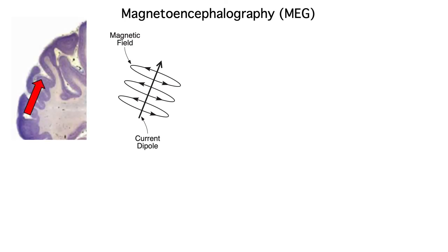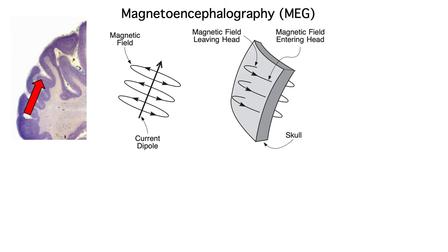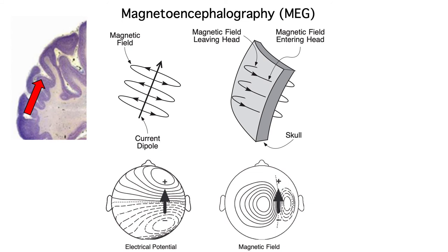So, the electrical dipoles that create the EEG and ERPs also create a magnetic field, the MEG. If a dipole lies right underneath the skull, the magnetic field will exit the skull and enter again, and the strength of this magnetic field will go up and down along with the EEG. The magnetic field outside the head runs perpendicular to the electric field on the scalp.